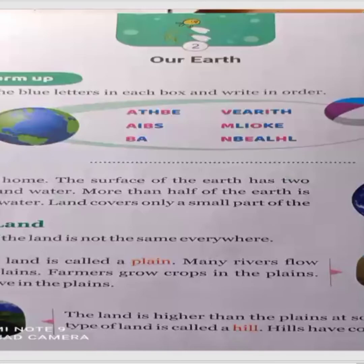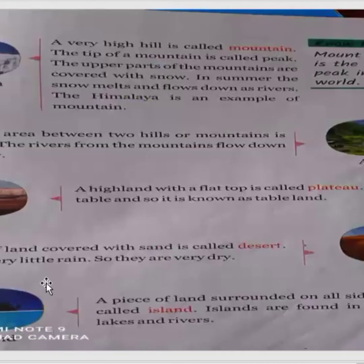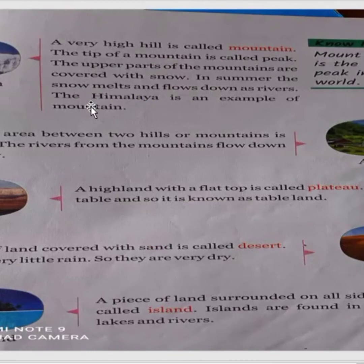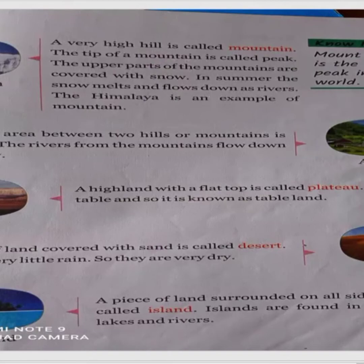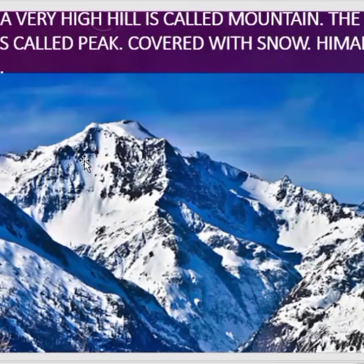And the next type of land is mountain. What is a mountain? A very high hill is called a mountain. The tip of the mountain is called peak. The upper parts of the mountains are covered with snow. In summer, the snow melts and flows down as rivers. The Himalaya is an example of mountain.